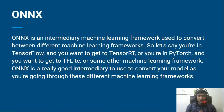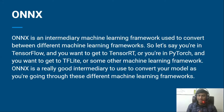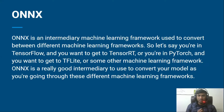As I've already discussed, ONNX is an intermediary machine learning framework that helps you convert your model to a different framework model type. For example, if you are working on TensorFlow and you want to convert your model to PyTorch, you can easily do that using ONNX.